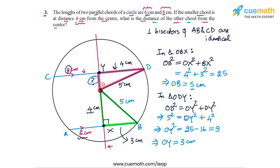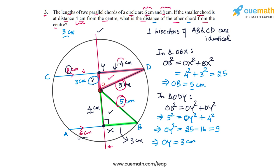So the length of OY is 3 cm, which means the distance of chord CD — the longer chord — from the center is 3 cm. To summarize: first, we observed that the perpendicular bisectors of both chords are common because the two chords are parallel. Then we applied the Pythagoras theorem to triangle OBX to find the radius of the circle, which was 5 cm. That allowed us to apply the Pythagoras theorem to triangle ODY, where we knew the radius (5 cm) and one other side (4 cm), giving us the third side OY = 3 cm. So that completes question number 3.